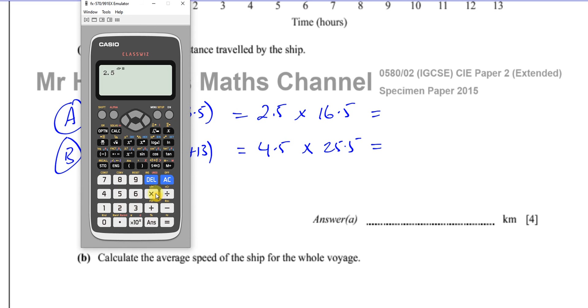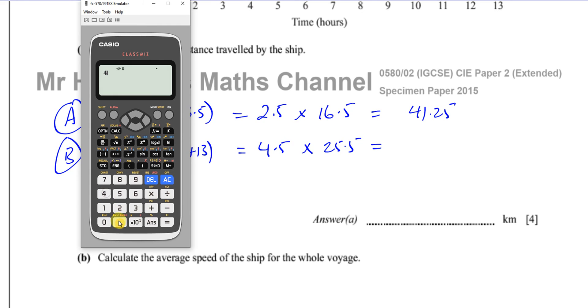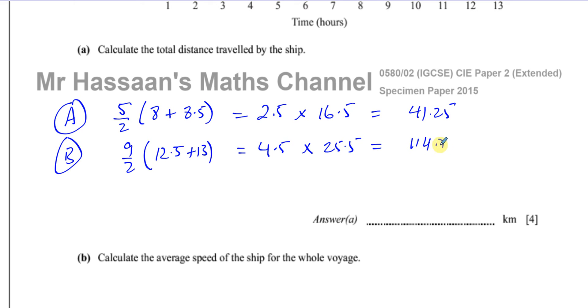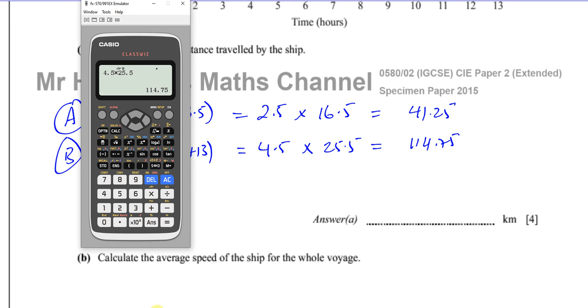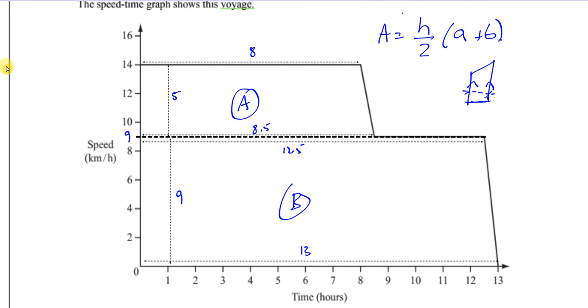So we can find those areas. 2.5 times 16.5 plus 4.5 times 25.5. Let me just do it one at a time. That's going to give me 41.25. And this part's going to give me 4.5 times 25.5, which is 114.75. So in total, that's going to give me 156 kilometers. The total distance it travels is 156 kilometers in that journey.